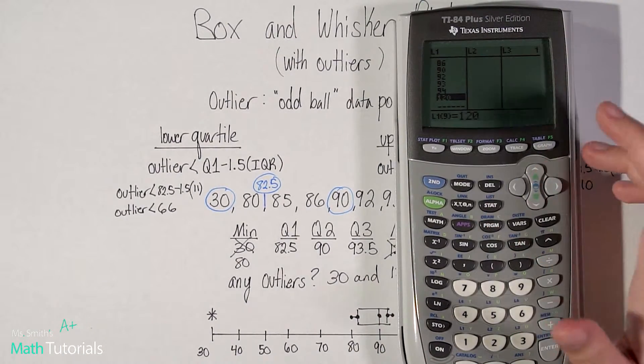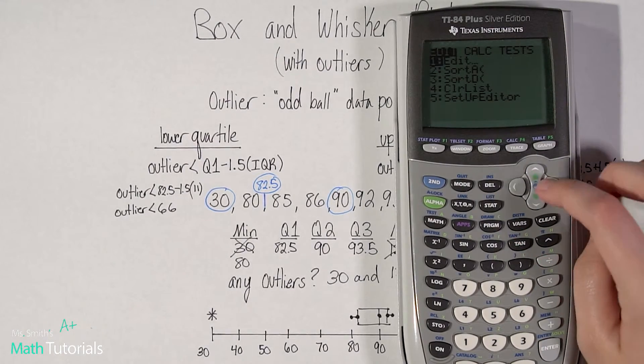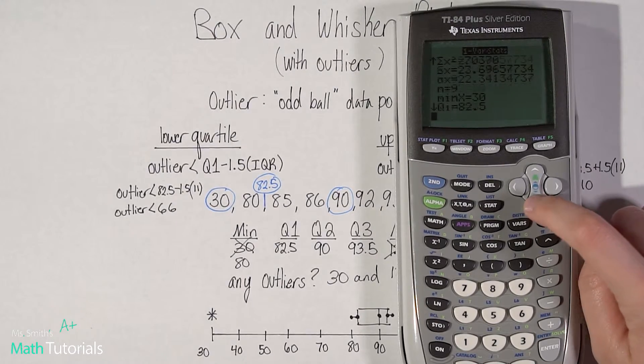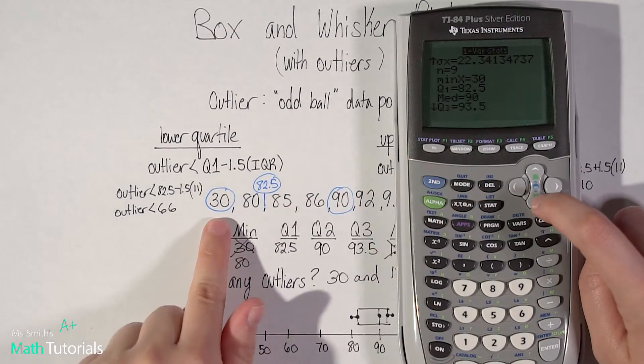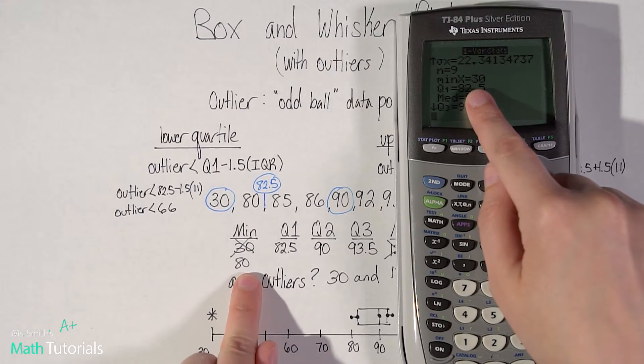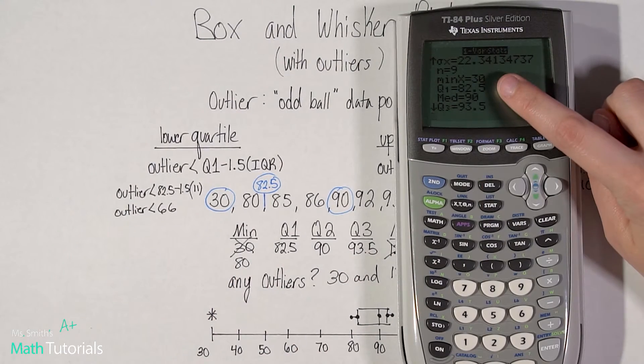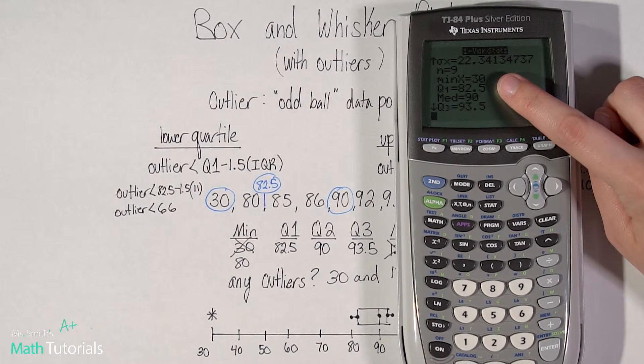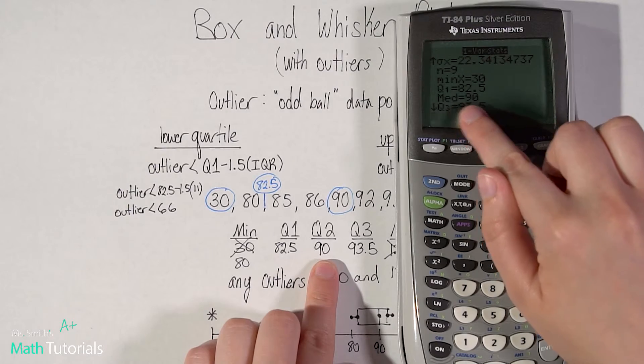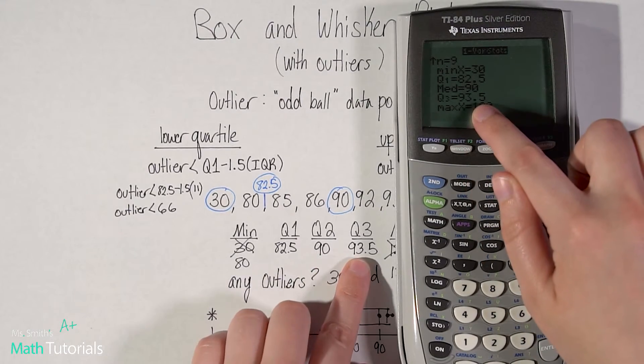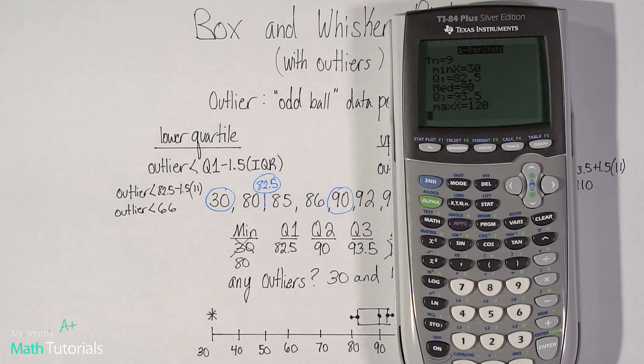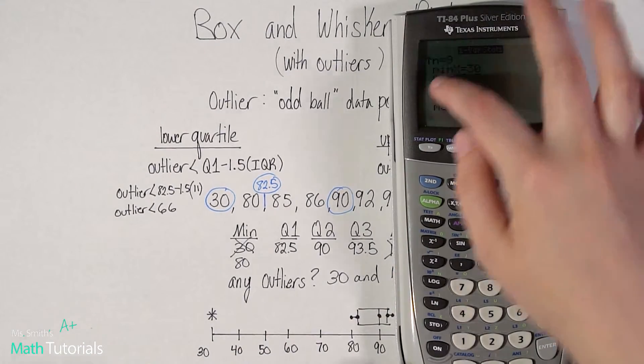So there's a couple options. One would be to go to stat, go over to calc, and use this variable stats again. We've been here before. And if you scroll down, you'll see your minimum is 30. Your Q1 is 82.5. Now notice we ended up crossing out the 30 and we said, no, it'll be 80. This is going to show you the original, prior to us doing outliers. So just keep that in mind. Q1 was 82.5. Median, which is the same thing as Q2, is 90. Q3 is 93.5. And the maximum, it shows the outlier. So 120.